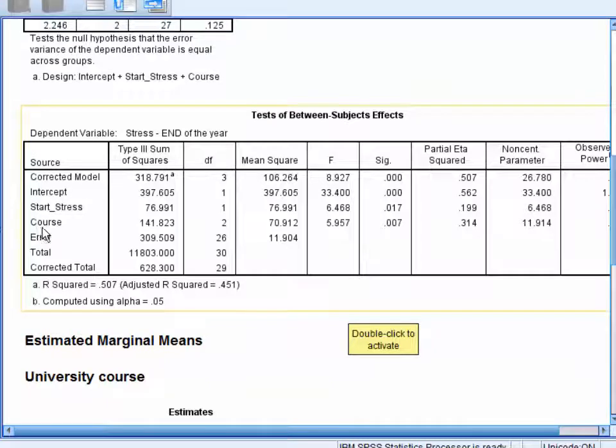Below this, we can see that even after controlling for stress at the start of the year, university course is also significantly related to our dependent variable.